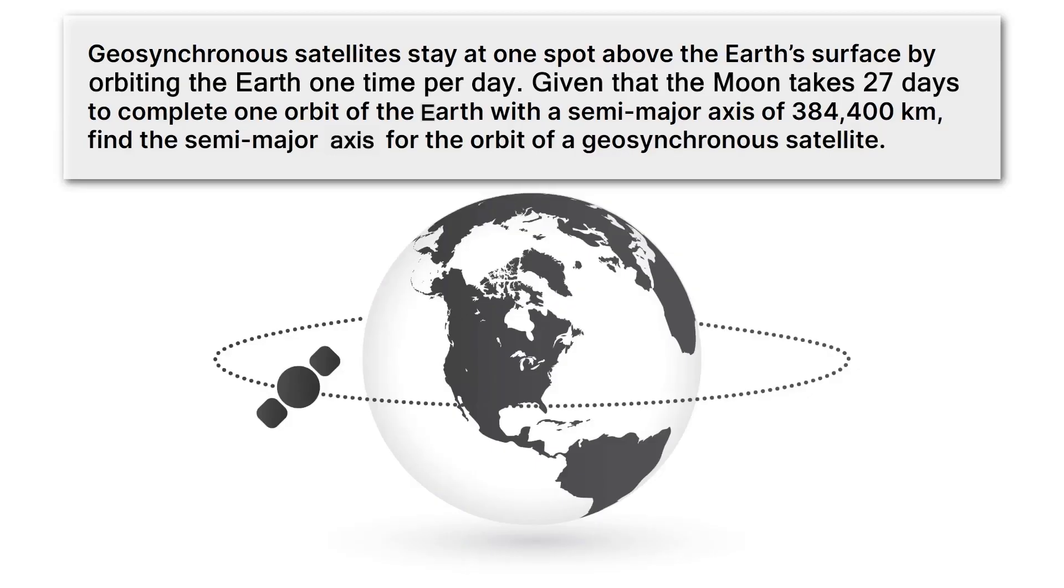That's the topic of our first problem, which says geosynchronous satellites stay at one spot above the Earth's surface by orbiting exactly one time per day, like we just said. Now we're going to be given information about the Moon, which may seem confusing, but remember that Kepler's third law always compares two objects. So it says given that the Moon takes 27 days to complete one orbit of the Earth with a semi-major axis of 384,400 kilometers, find the semi-major axis for the orbit of a geosynchronous satellite.